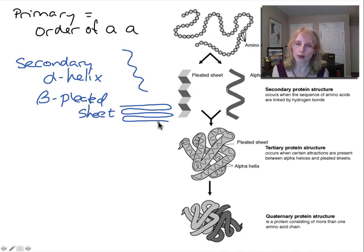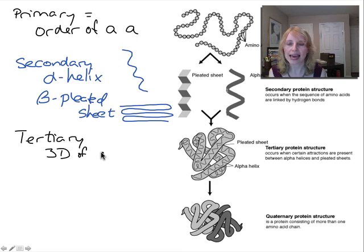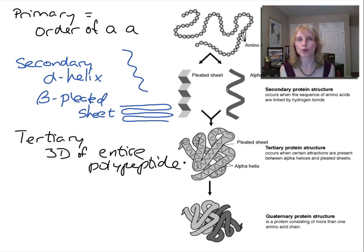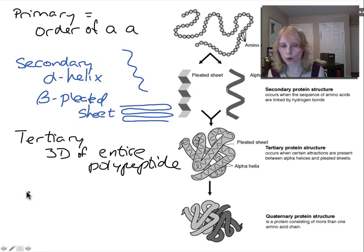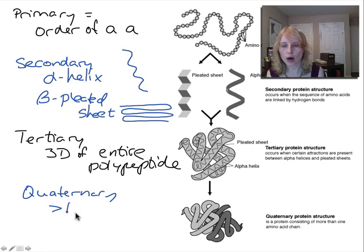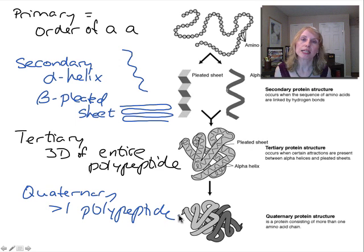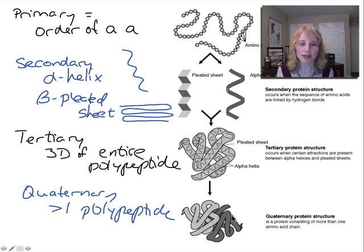Now we move on to the tertiary protein structure, which is the 3D shape of the entire polypeptide chain — how all the different secondary structures fold in on themselves to become the overall globular three-dimensional shape of the protein. Then we have the quaternary protein structure, which is when you have more than one polypeptide chain making up a particular protein. Not all proteins have quaternary structure — only certain ones made up of more than one polypeptide chain that interact together to form the fully functional protein.